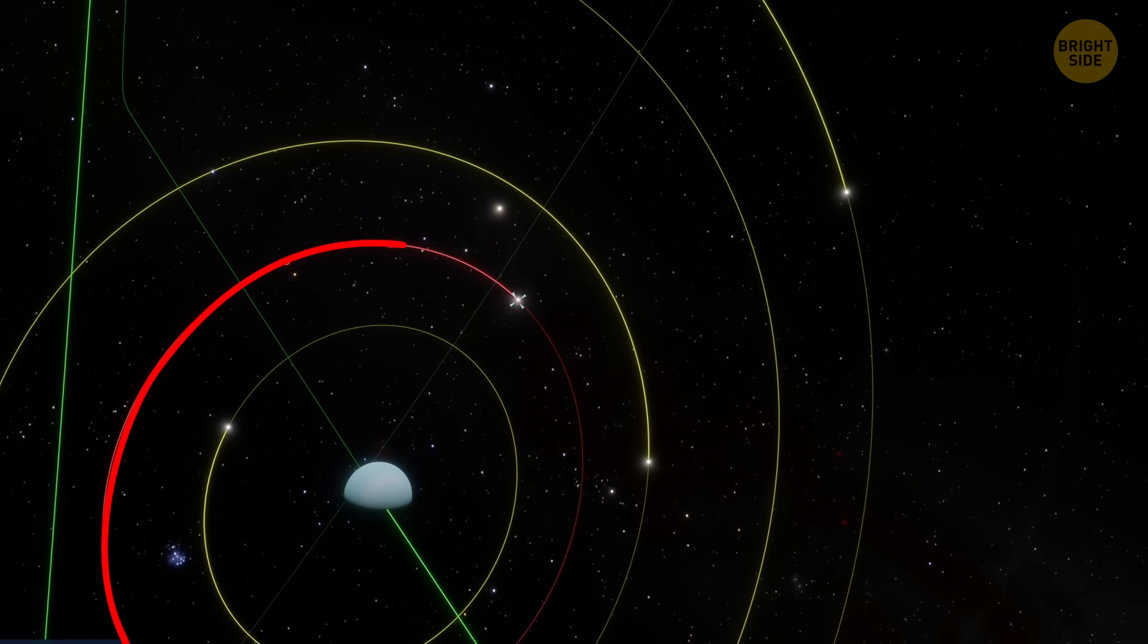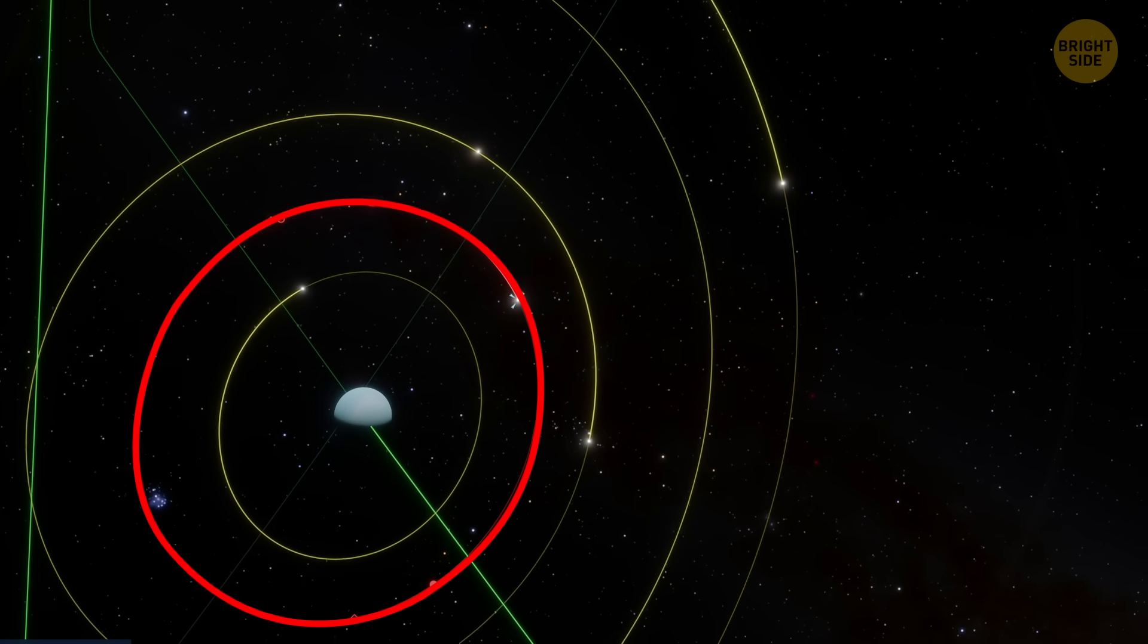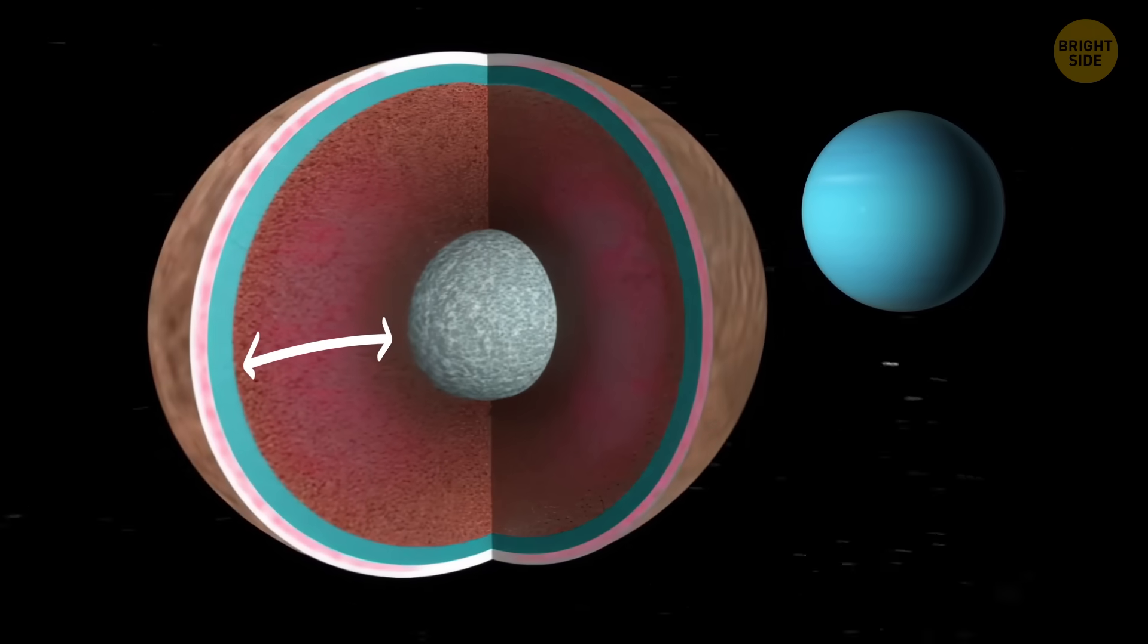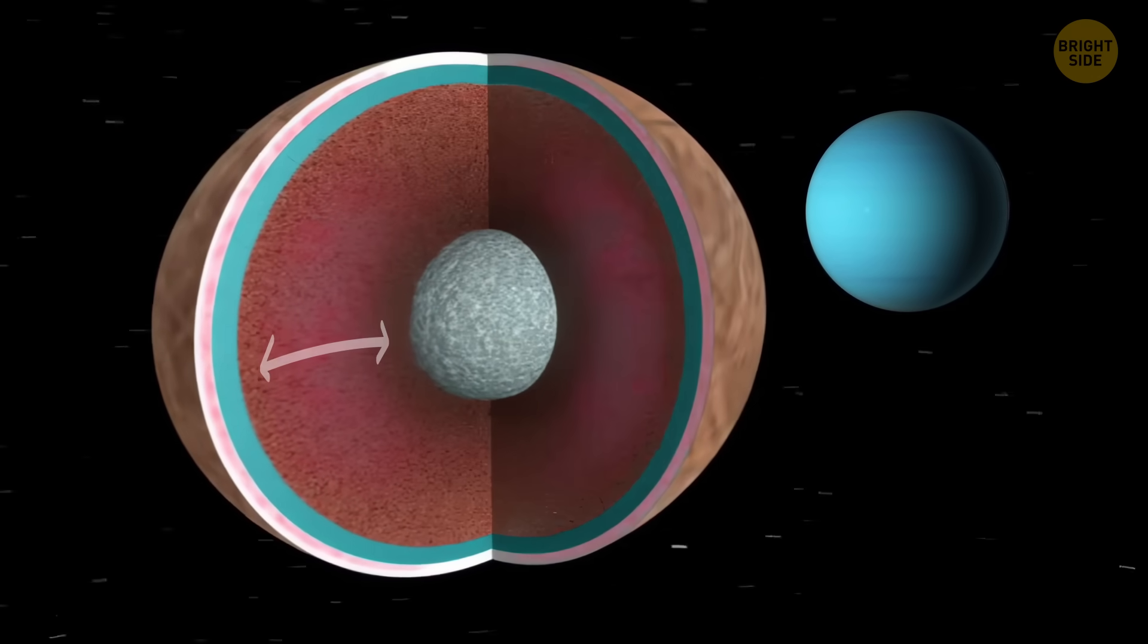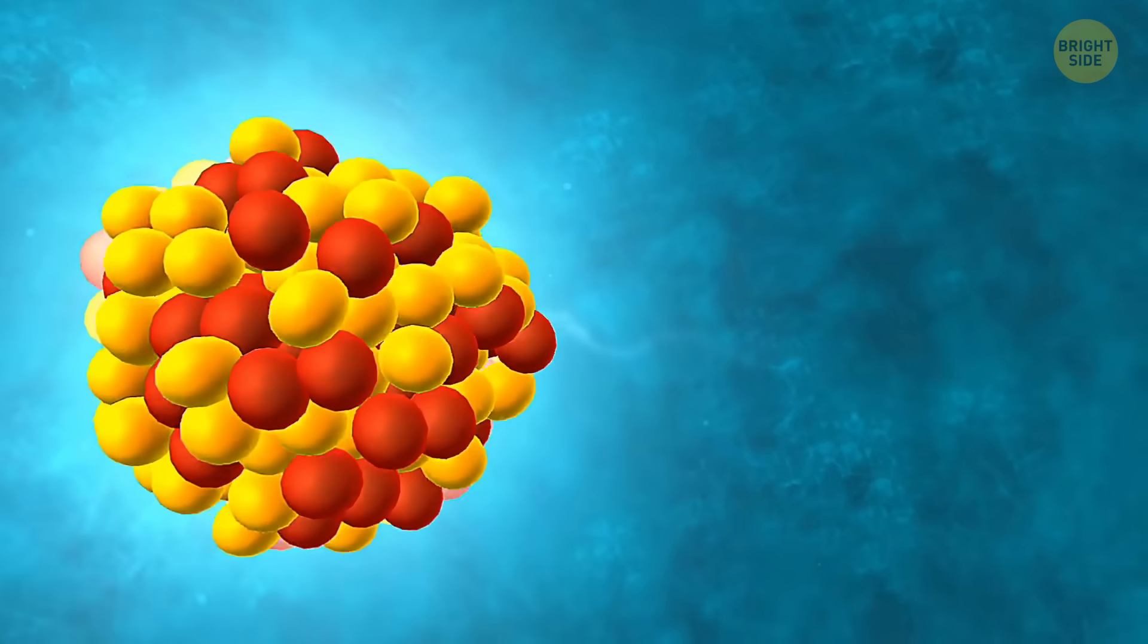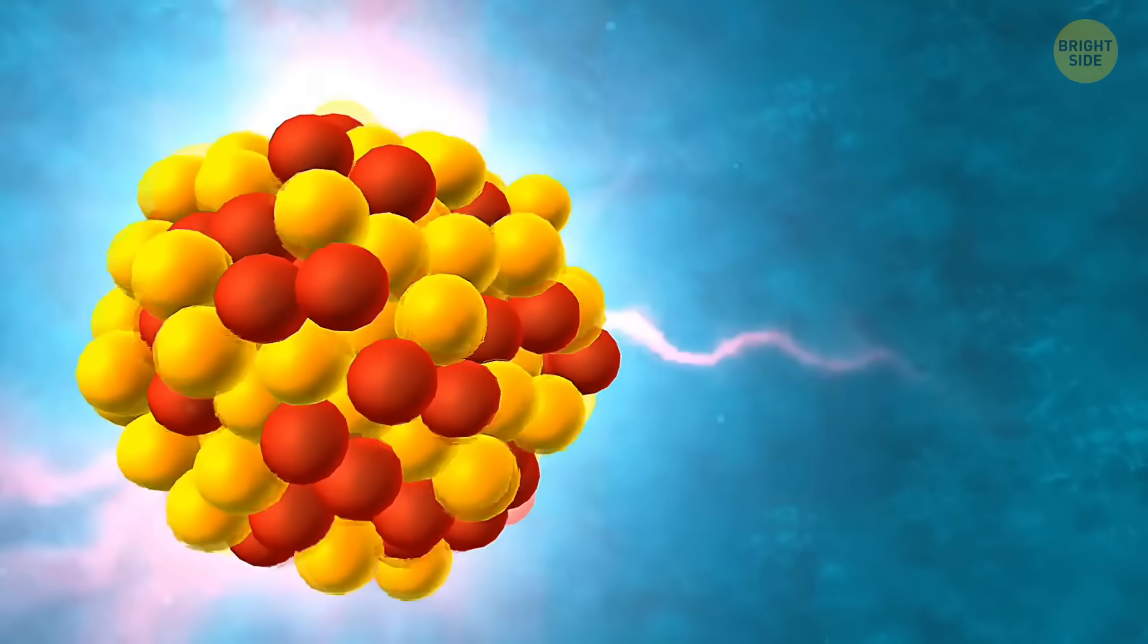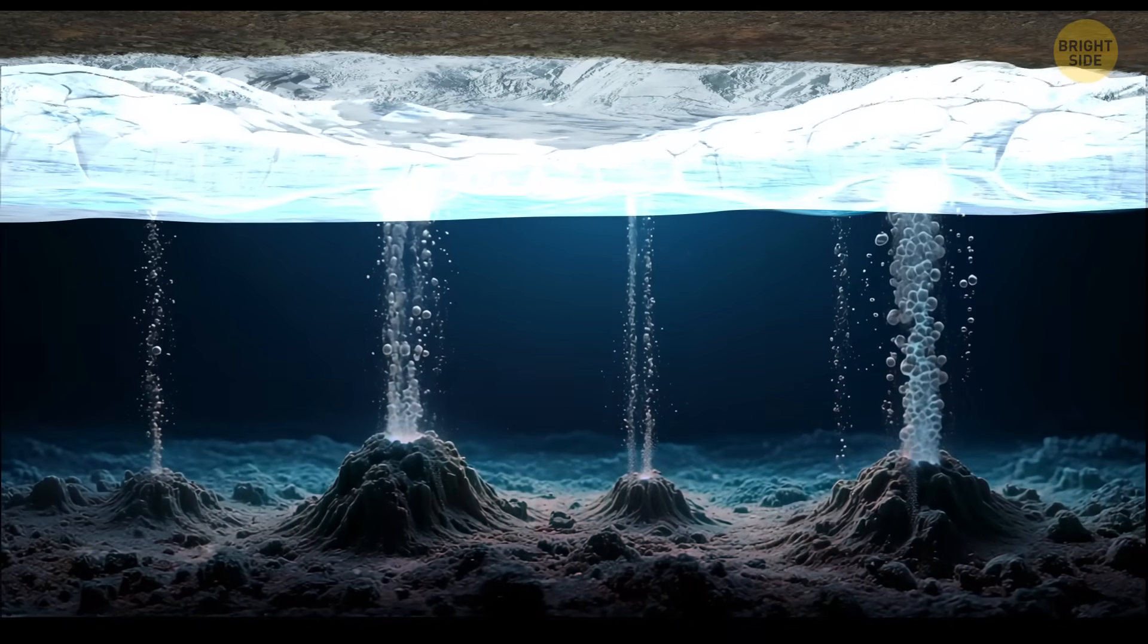Well, Ariel's orbit isn't perfectly circular, but slightly oval, which scientists call eccentric. That means as it circles Uranus, the gravitational pull changes a little each time. The constant tugging stretches and flexes the moon's interior, creates friction, and voila, generates heat. Combine that with natural radioactive decay inside the rocky core, and suddenly you've got enough warmth to melt ice deep below the surface.